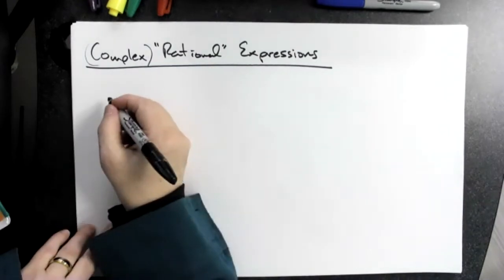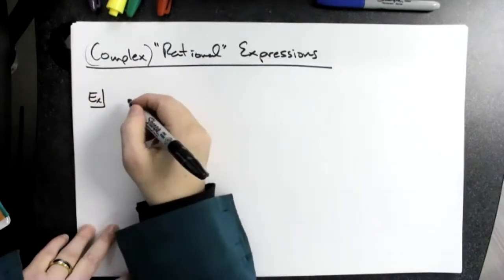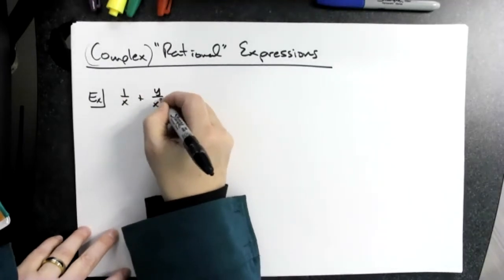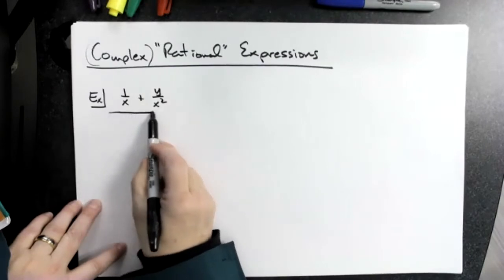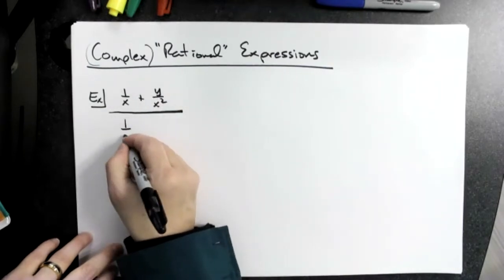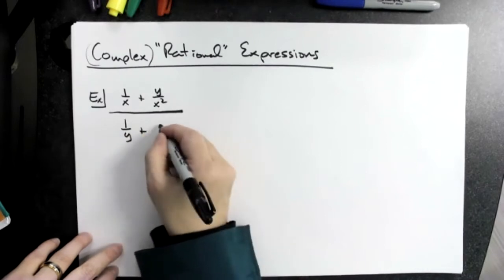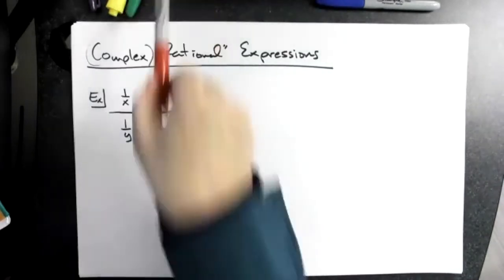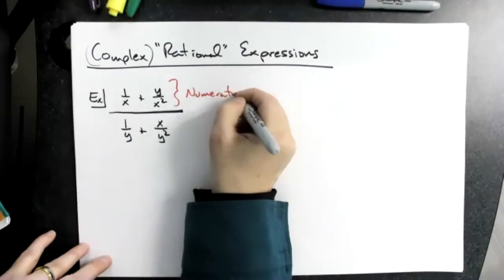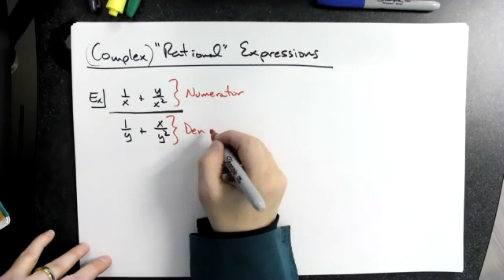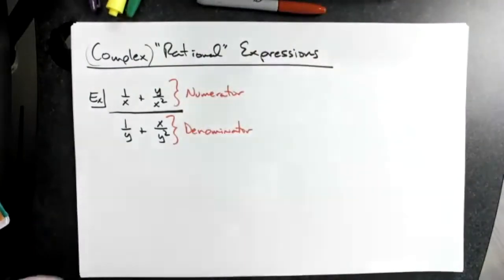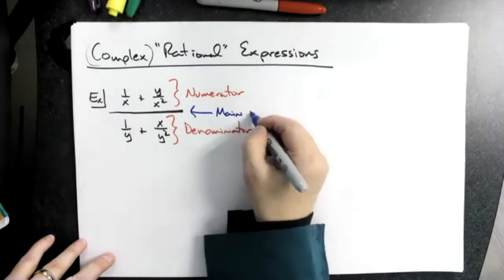So the problems are going to be kind of large. For example, say we had a 1 over x plus a y over x squared — that's all in the numerator — and then there's the big fraction bar. Down here in the denominator, I might have something like a 1 over y plus an x over y squared. Everything up here is the numerator, everything down here is the denominator, and the line in the middle is the main fraction bar.